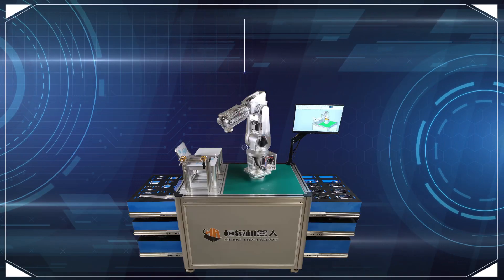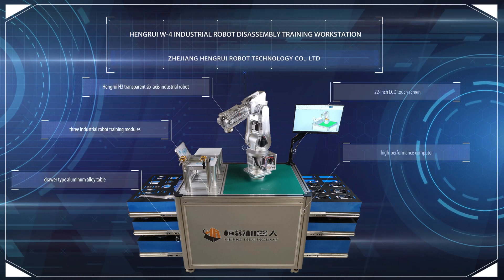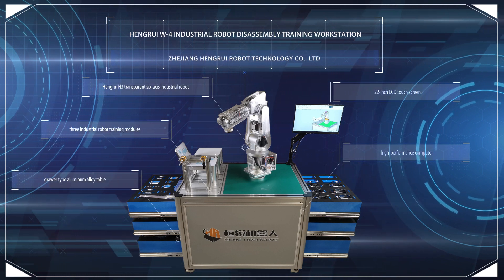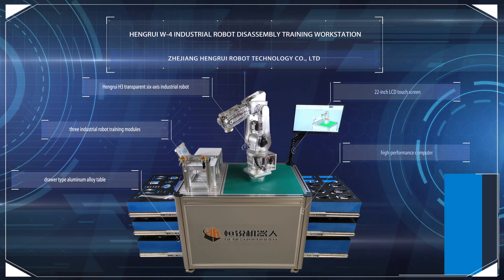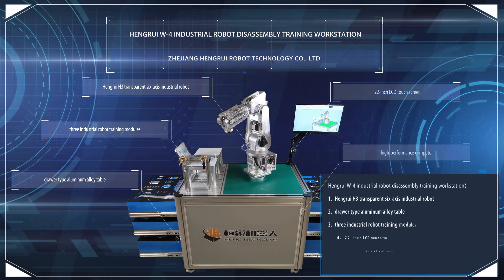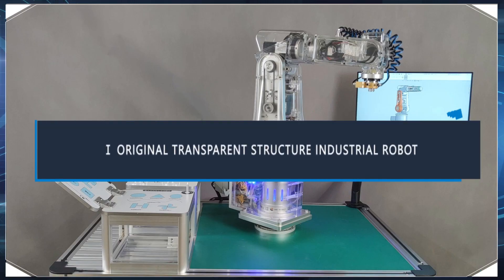Henry W4 Industrial Robot Disassembly Training Workstation is mainly composed of Henry H3 transparent 6-axis industrial robot, drawer type aluminum alloy table, three industrial robot training modules, 22-inch LCD touchscreen, and high-performance computer. The workstation has the following four main functional features.